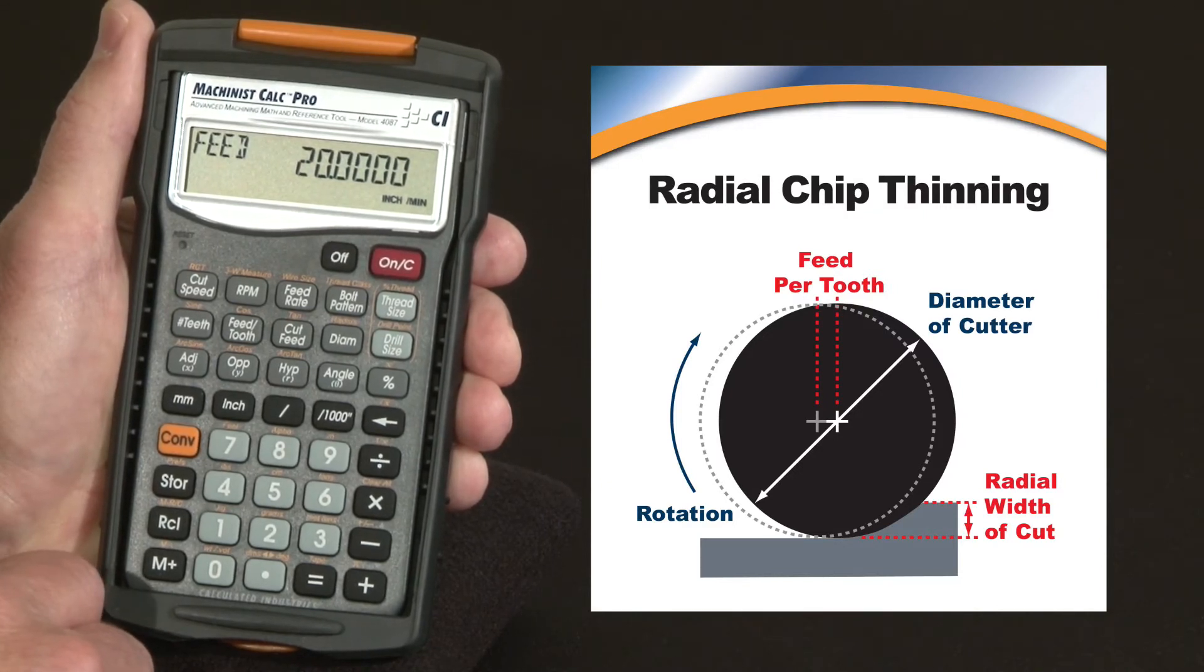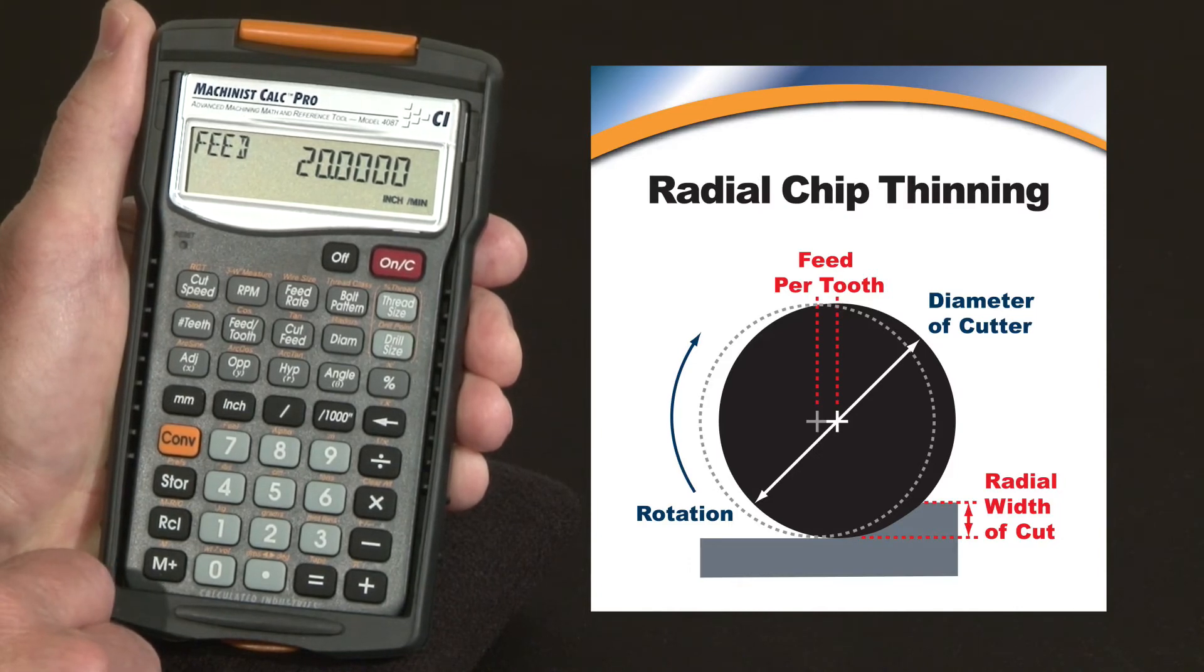But if it's less, say our cut depth is only a tenth of an inch, you would definitely want to use the radial chip thinning function.